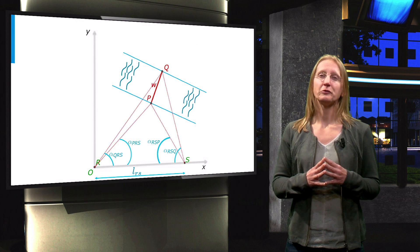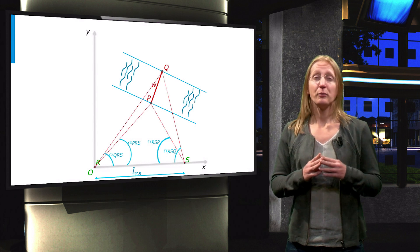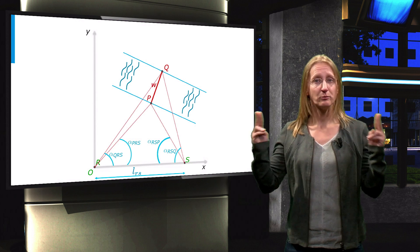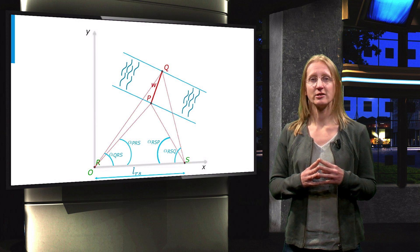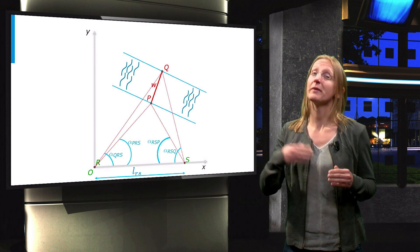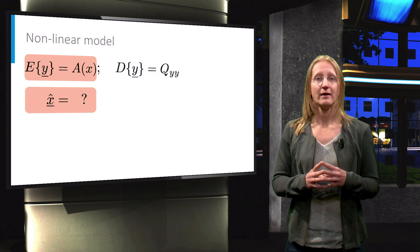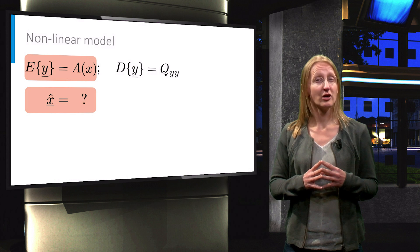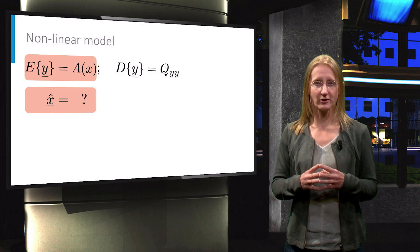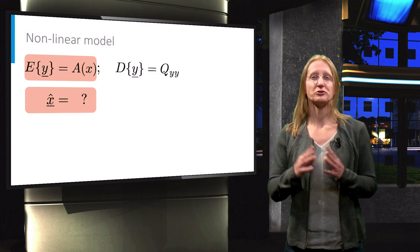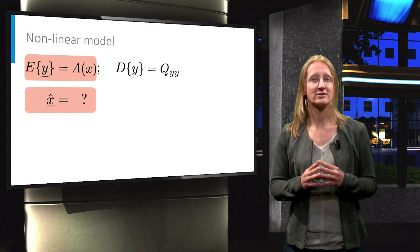In total, the cool guys took 4 angle measurements plus 1 distance measurement between points r and s. In the exercises you will be asked to set up the observation equations for the remaining observations yourself. Having seen these examples of non-linear observation equations forming a non-linear functional model, we can introduce the principle of non-linear least squares estimation in the next video.